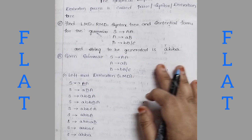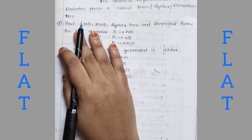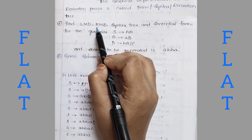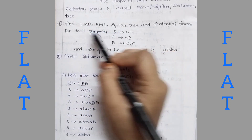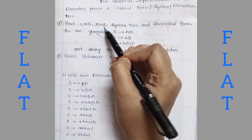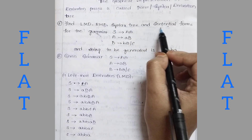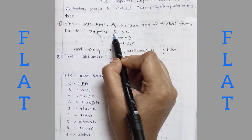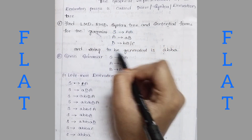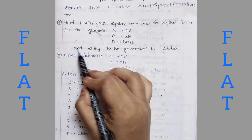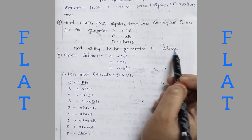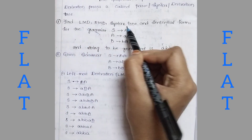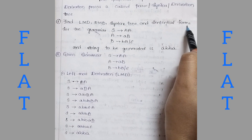Here is the question: Find LMD (leftmost derivation), RMD (rightmost derivation), syntax tree, and sentential form for the grammar. The string to be generated is ABBA. So we have four parts to this question: leftmost derivation, rightmost derivation, syntax tree, and sentential form.